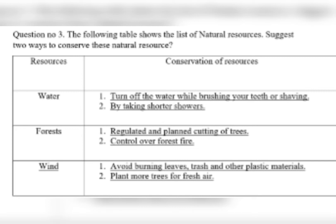Now question number three: the following table shows a list of natural resources — suggest two ways to conserve each. For water: turn off the water while brushing your teeth or shaving, and take shorter showers. For forests: regulated and planned cutting of trees should be done, and control over forest fires. For wind: avoid burning of leaves, trash, and plastic materials directly into the air, and plant more trees for fresh air. That was all for today's lecture — write these questions in your notebooks as homework. Thank you so much.